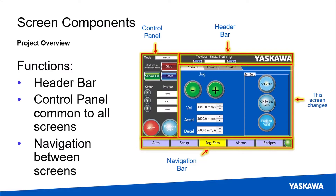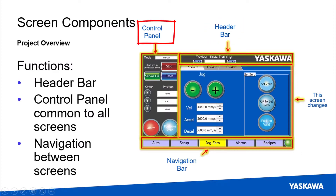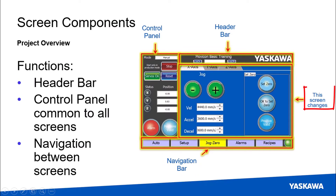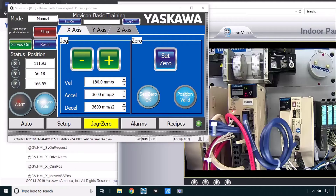This is a common layout. You have a static header bar, a control panel on the left, a navigation bar on the bottom, and main screens that change as you navigate. This will probably work better with just a quick demonstration of a final working solution of this HMI project.